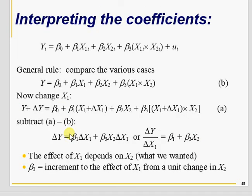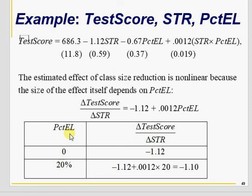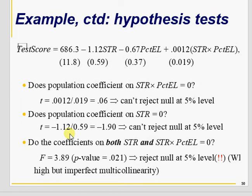That's how we interpret change in Y due to change in X. The slope will be different at different points — for example, if percentage English learner is 0% versus 20%, or if student-teacher ratio is 20 versus 18. So you have to do it point by point.